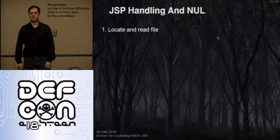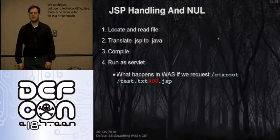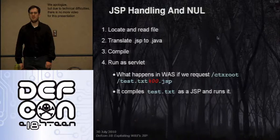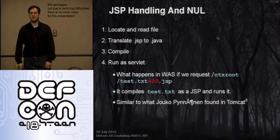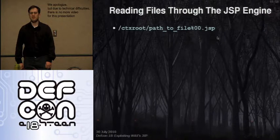What about the JSP engine inside of WAS — how does it deal with a null character coming in? JSP handling is very simple: it locates the file, translates the .JSP into Java, compiles it into a servlet, and runs it. What happens with WAS before it was patched, if we request %00.JSP for an arbitrary file inside the WAR? The answer is it actually compiled it as test.txt as a servlet and runs it as a JSP. This is similar to a vulnerability found in Tomcat. This allows us to read files through the JSP engine — if we have our context root for a web application, we just append %00.JSP to the end of it and we'll get the file.